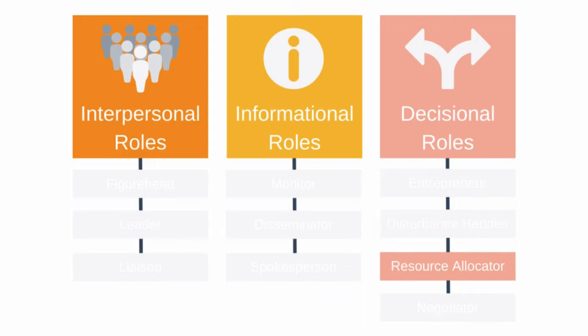Next, we have resource allocator. Being a resource allocator means you have to decide where to allocate your people and your budget. This will involve planning, scheduling, and budgeting. For example, maybe you decide to allocate 70% of your budget to short-term projects and 30% to long-term projects. Or maybe you manage a startup and decide to commit 90% of your team to research and development and just 10% to operations.